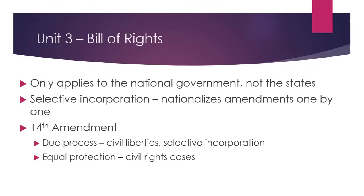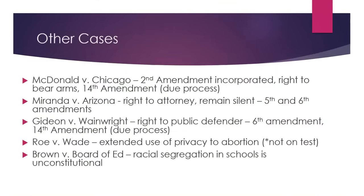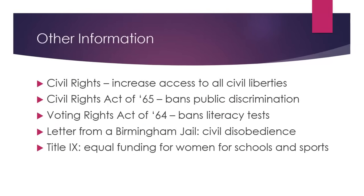When we get into Unit 3, remember that the Bill of Rights only applies to the national government, not the states. It's through selective incorporation — done under the 14th Amendment — that each aspect of the Bill of Rights is nationalized one by one. When we're dealing with civil liberties, we're dealing with selective incorporation; when we're dealing with the Equal Protection Clause, we're dealing more with civil rights cases. Know some of these First Amendment cases — they are foundational. The exclusionary rule means that if police acquire evidence illegally, that cannot be used against you. And with the Eighth Amendment, there are certain populations that cannot receive the death penalty.